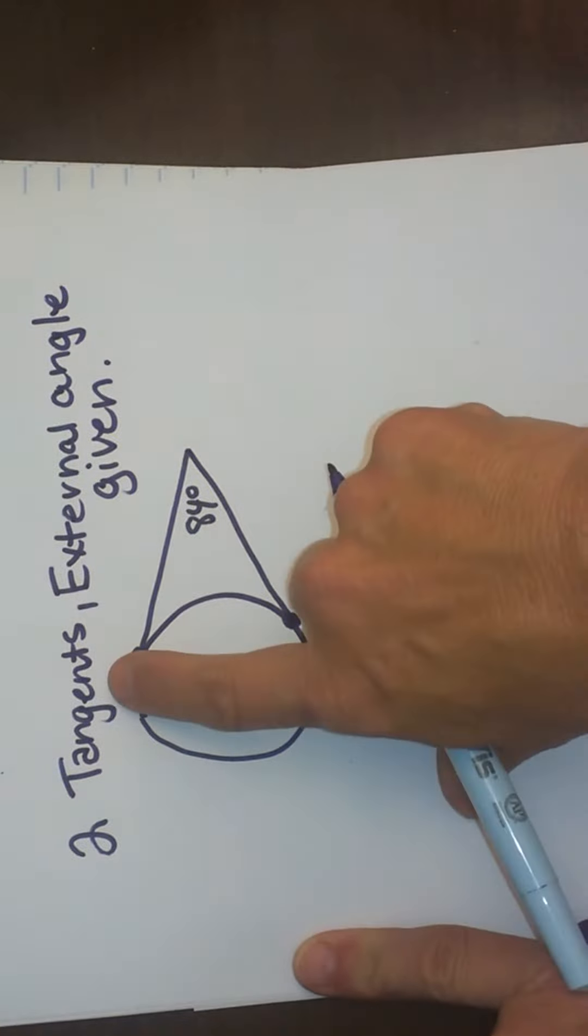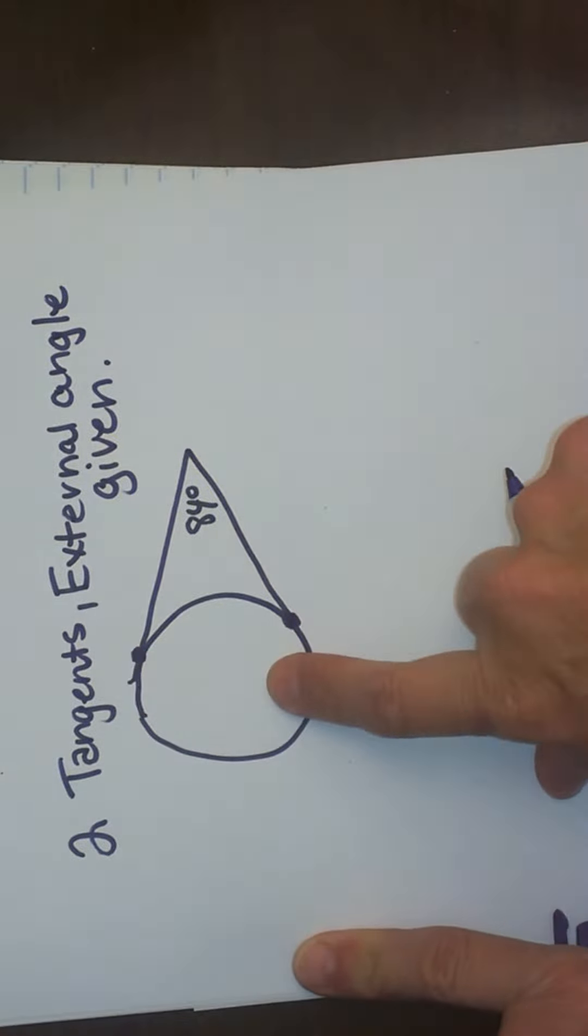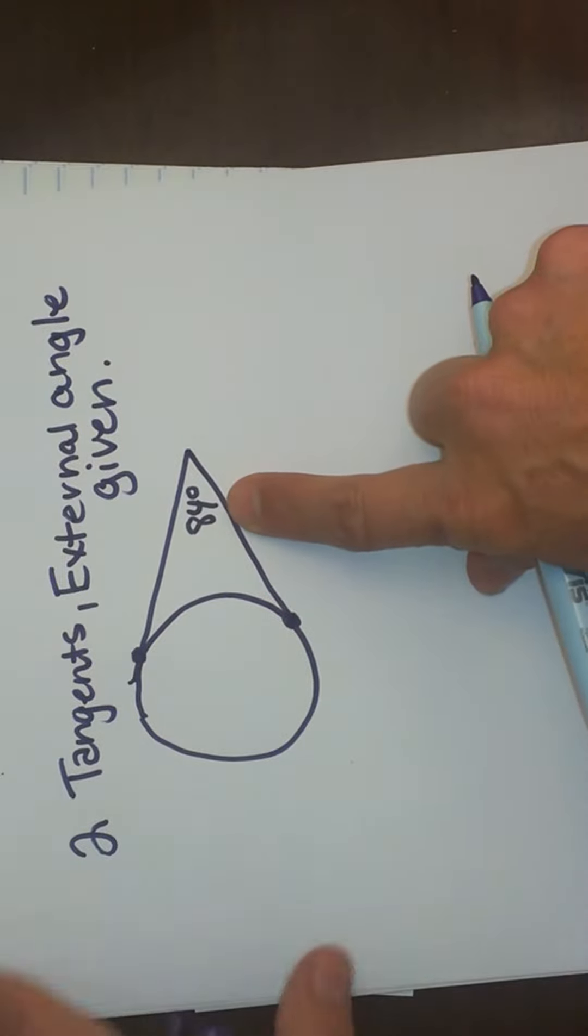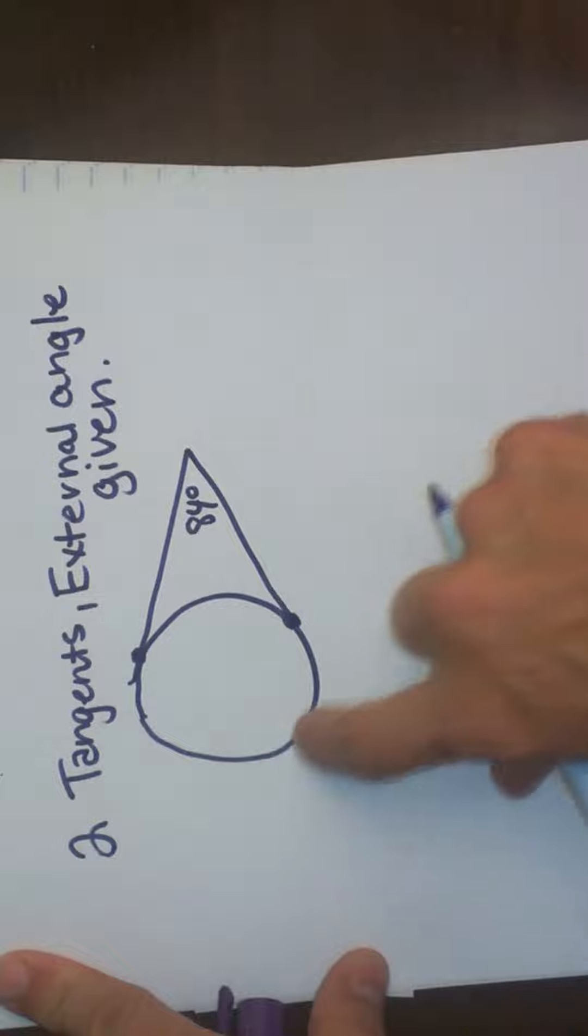We were given that we had two tangents to a circle and an external angle that is 84 degrees. How do you find these arcs?